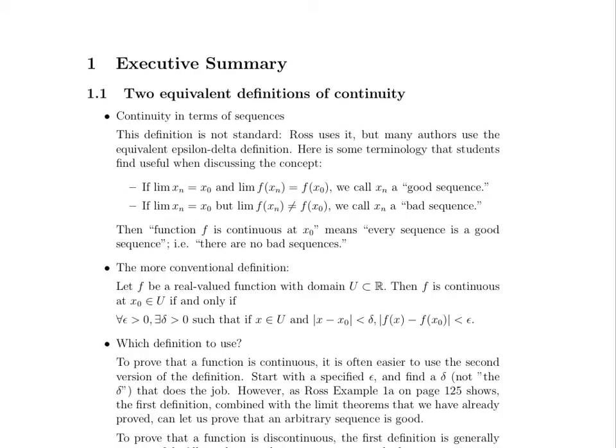And if the alternative happens, where we have a sequence in the domain x sub n, it approaches x naught, but the sequence made of the function values of that particular sequence, so the limit of f of x sub n does not approach the function value at x naught, then we call x sub n a bad sequence. And so the way that Ross defines continuity is he says that a function f is continuous at some point x naught, if every sequence is a good sequence. So if no matter how you approach x naught in the domain, you'll also be creating a sequence of function values that are approaching the function value f of x naught.